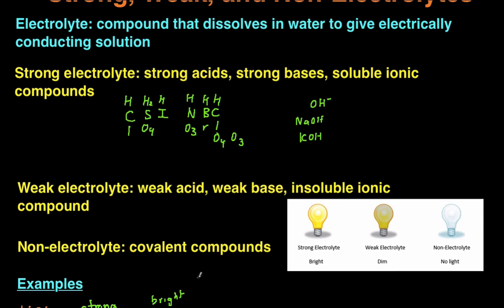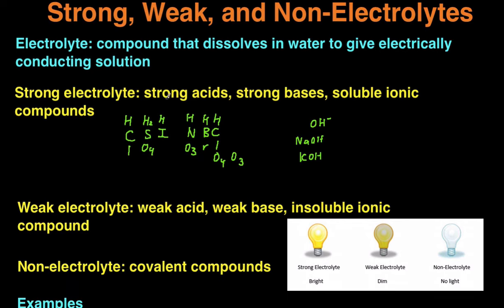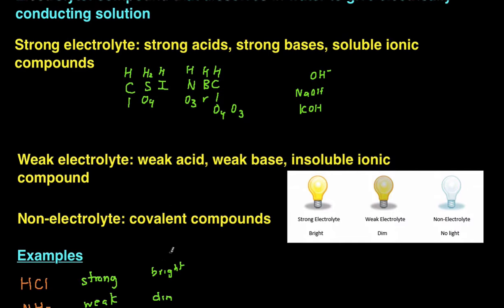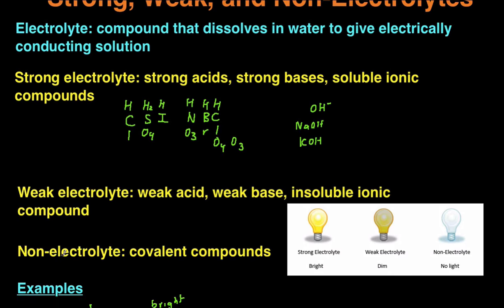Hopefully that made a lot of sense. We covered what strong, weak, and non-electrolytes are, and what each category contains. It really just comes down to knowing that strong electrolytes are strong acids, strong bases, and soluble ionic compounds — so you have to recognize what's a strong acid, what's a strong base, and know your solubility rules. For weak electrolytes, you need to know weak acids, weak bases, and insoluble ionic compounds. And for non-electrolytes, it's just any covalent compound — any compound containing solely non-metals that's not an acid or a base.